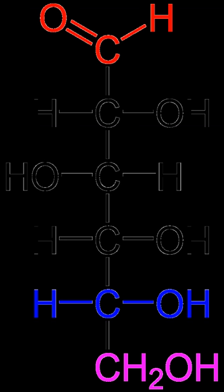Carbohydrate consumed in food yields 3.87 kcal of energy per gram for simple sugars, and 3.57 to 4.12 kcal per gram for complex carbohydrate in most other foods. Relatively high levels of carbohydrate are associated with processed foods or refined foods made from plants, including sweets, cookies and candy, table sugar, honey, soft drinks, breads and crackers, jams and fruit products, pastas and breakfast cereals.